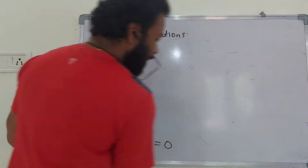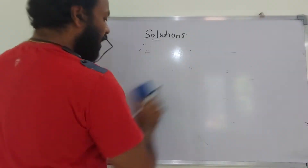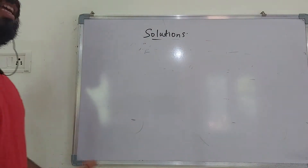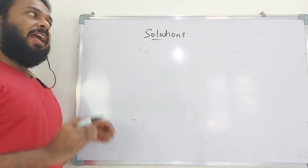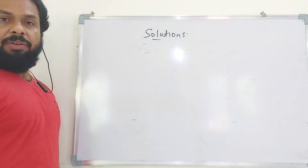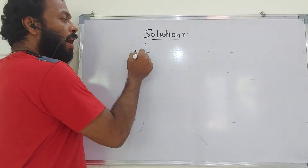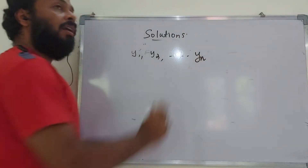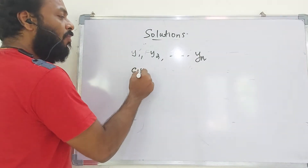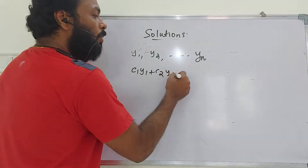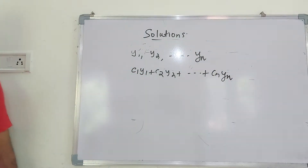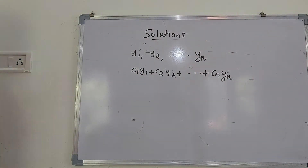We can generalize this result: if we are given an nth order differential equation and it has n linearly independent solutions y1, y2, ..., yn, then any linear combination c1·y1 + c2·y2 + ... + cn·yn is also a solution of the given differential equation.